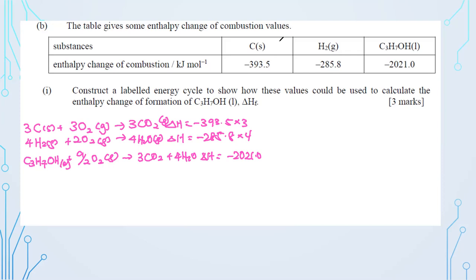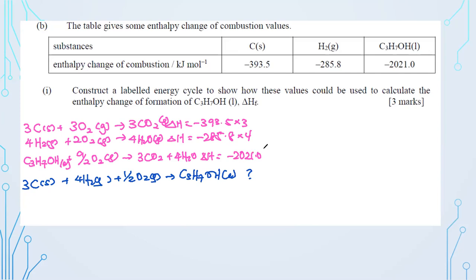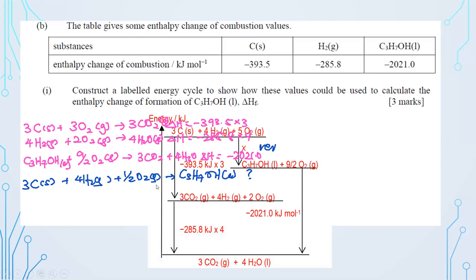For the formation equation, write 3C + 4H₂ + ½O₂ → C₃H₇OH. Reverse the combustion of C₃H₇OH equation, then use Hess's Law to manipulate. The combustion of carbon and hydrogen should be on one side, and C₃H₇OH formation on the other side, constructing the expected Born-Haber/Hess cycle.